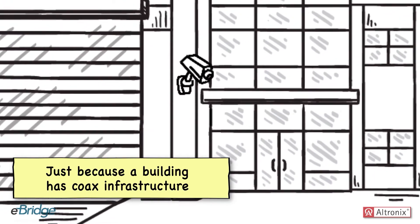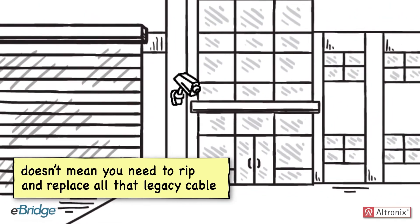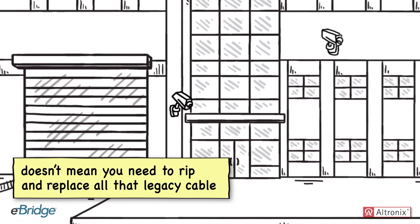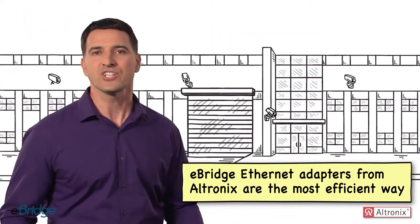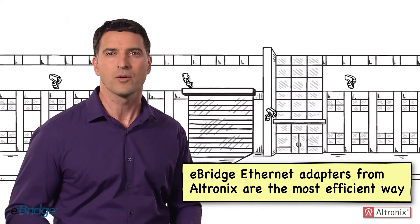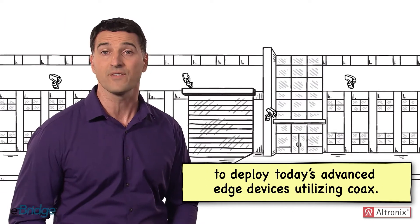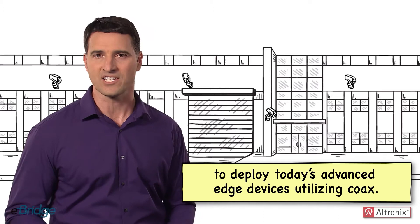Just because a building has coax infrastructure doesn't mean you need to rip and replace all that legacy cable to upgrade from analog to IP. eBridge Ethernet adapters from Altronix are the most efficient way to deploy today's advanced edge devices utilizing coax.